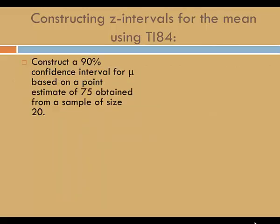Let's construct the z interval using a TI-84. Again, we'll construct a 90% confidence interval for mu based on a point estimate of 75 obtained from a sample of size 20.